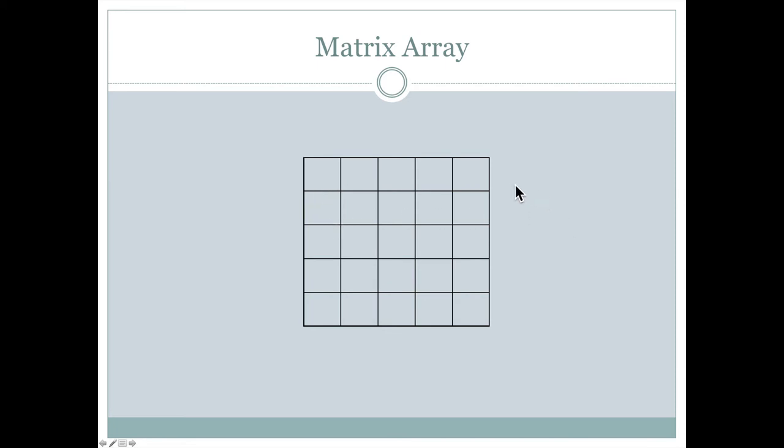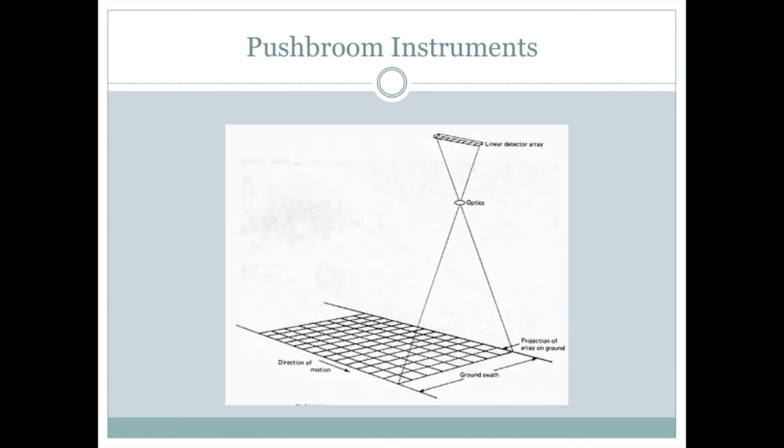So for satellite imagery, there would be a separate matrix for each of those bands in the previous image. And then all of those could be combined in order to come up with the display of the remote sensing image. So a matrix array is one way.